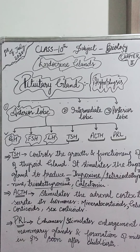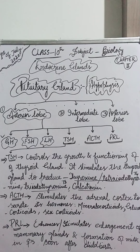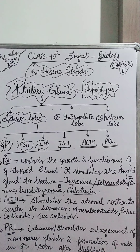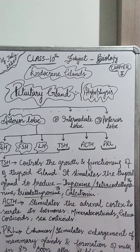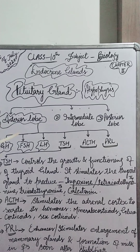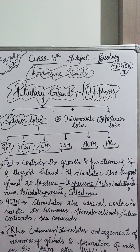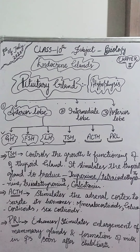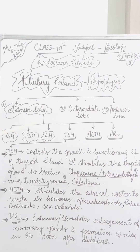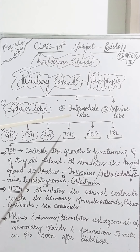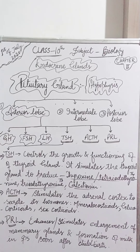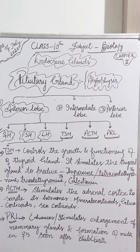Bismillahirrahmanirrahim. My dear students, assalamu alaikum warahmatullahi wabarakatuh. As you know, we are discussing the hormones secreted by the anterior lobe of the pituitary gland — the master gland, also called the hypophysis. It has three lobes: the anterior lobe, intermediate lobe, and posterior lobe. The anterior lobe of the pituitary secretes six hormones.